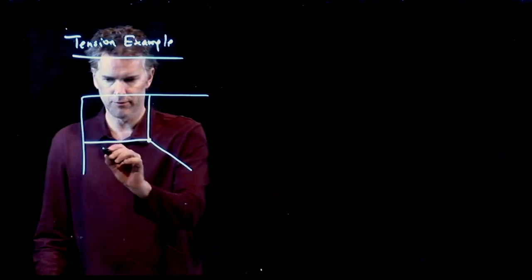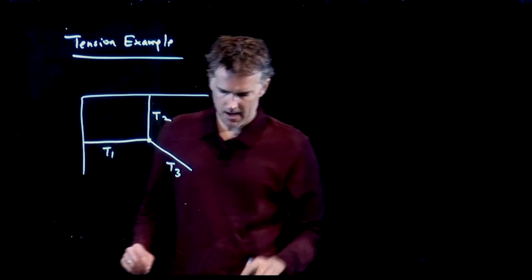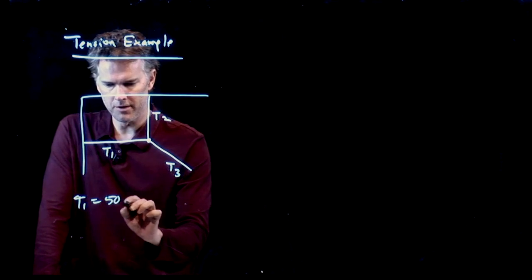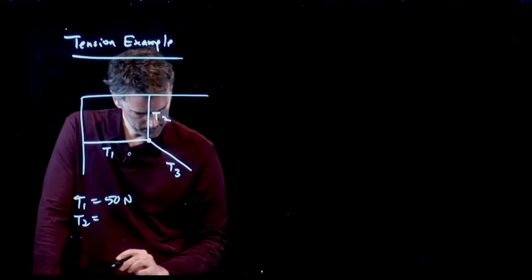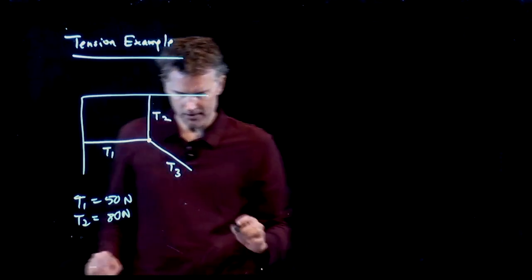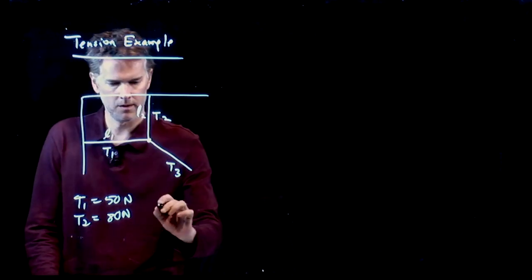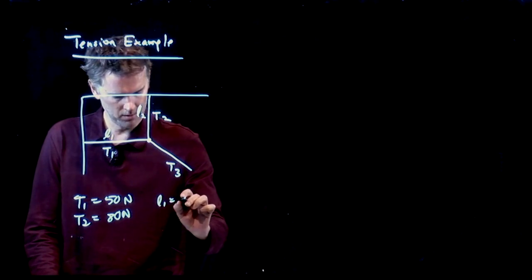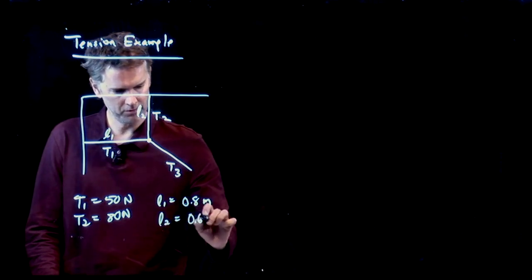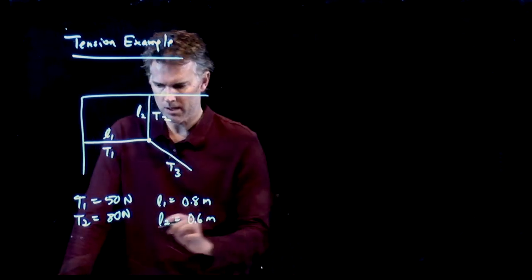And we know a few things. There's tension one, tension two, and tension three. Let's give you the tensions: T1 is 50 newtons, T2 is 80 newtons. We also give you some lengths of these different segments. This is L1, this is L2. L1 is 0.8 meters, L2 is 0.6 meters. And the question is: what is T3?